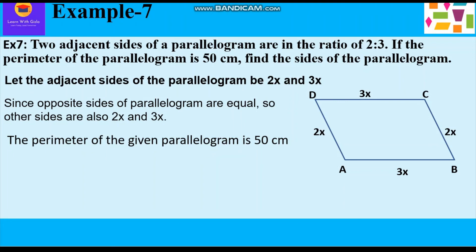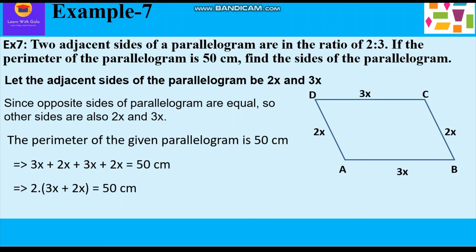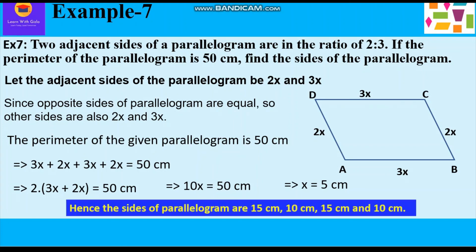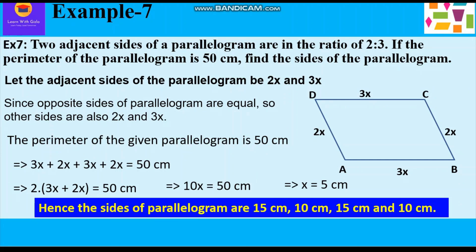The perimeter is the sum of all sides, so 3x plus 2x plus 3x plus 2x equals 50 cm, or 2 times (3x + 2x) equals 50 cm. So 2 times 5x equals 50 cm, giving 10x equals 50 cm, therefore x equals 5 cm. Hence the sides of the parallelogram are 3×5 = 15 cm and 2×5 = 10 cm, giving all four sides as 15 cm, 10 cm, 15 cm, and 10 cm.